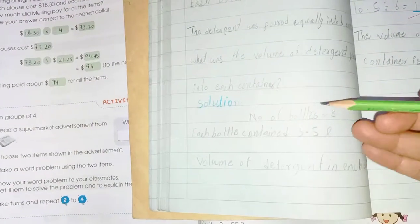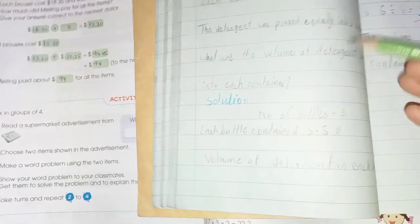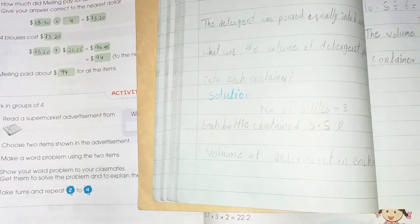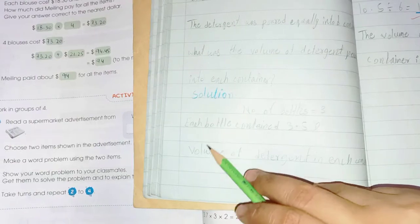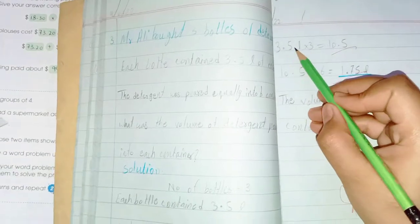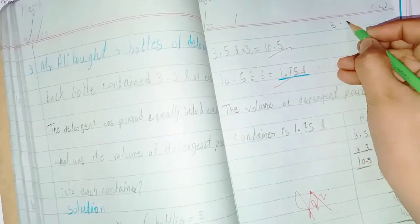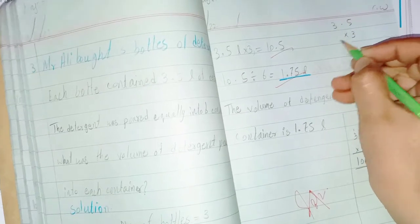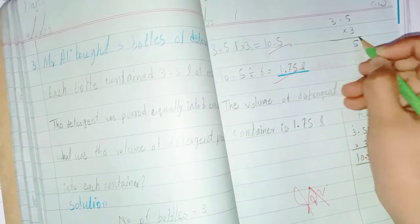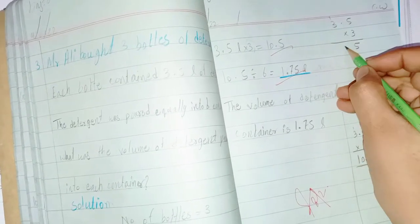So here again we simply write the solution. Number of bottles: 3. Each bottle contains 3.5 liters of detergent. Volume of detergent: we have to find. Simply multiply 3.5 with 3. When we multiply 3.5 with 3, 3 times 5 is 15, put 1 here. 3 times 3 is 9, plus 1 is 10, and the point should be after 10. So 10.5 liters.